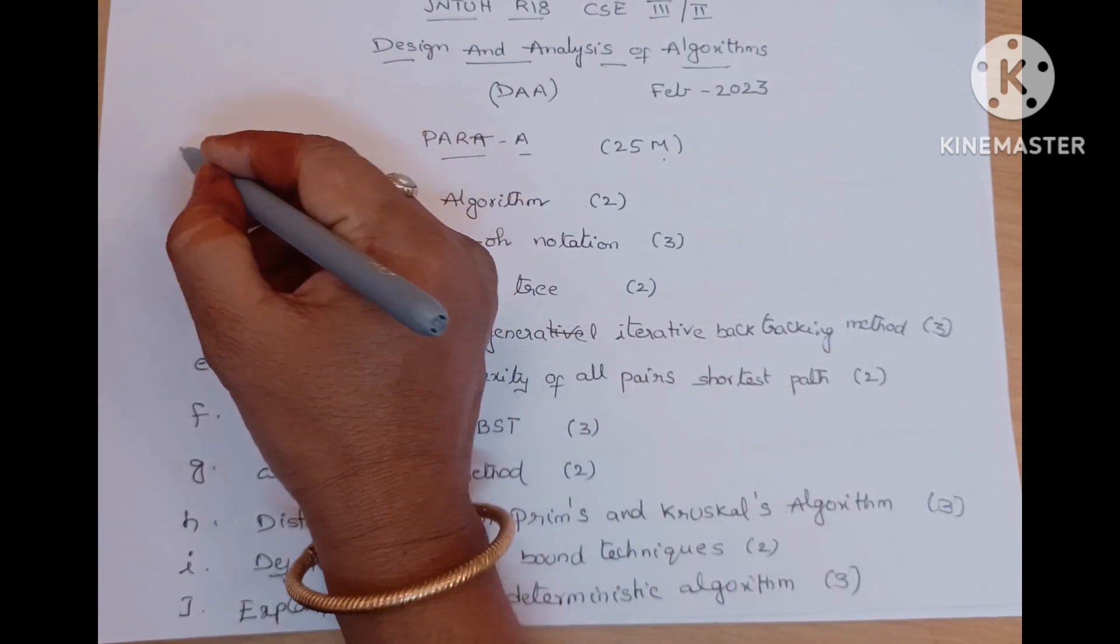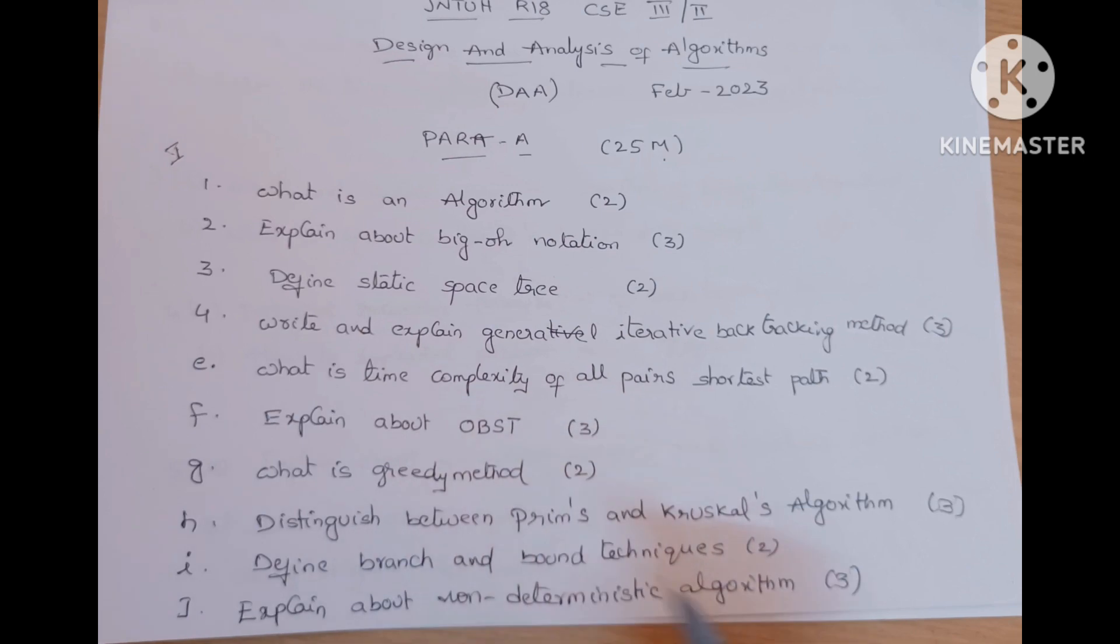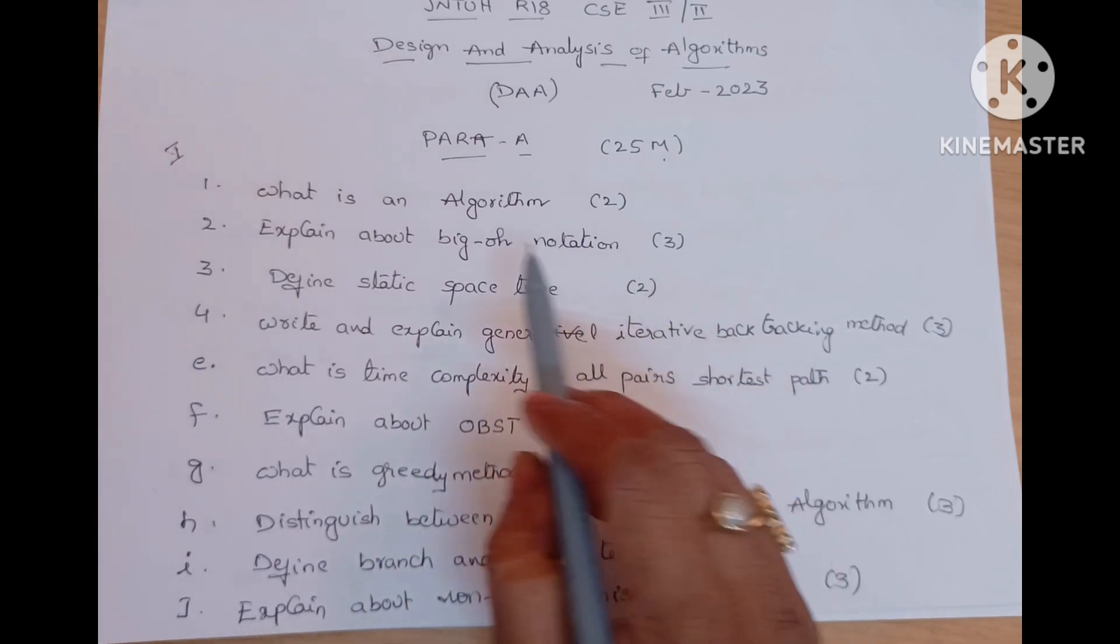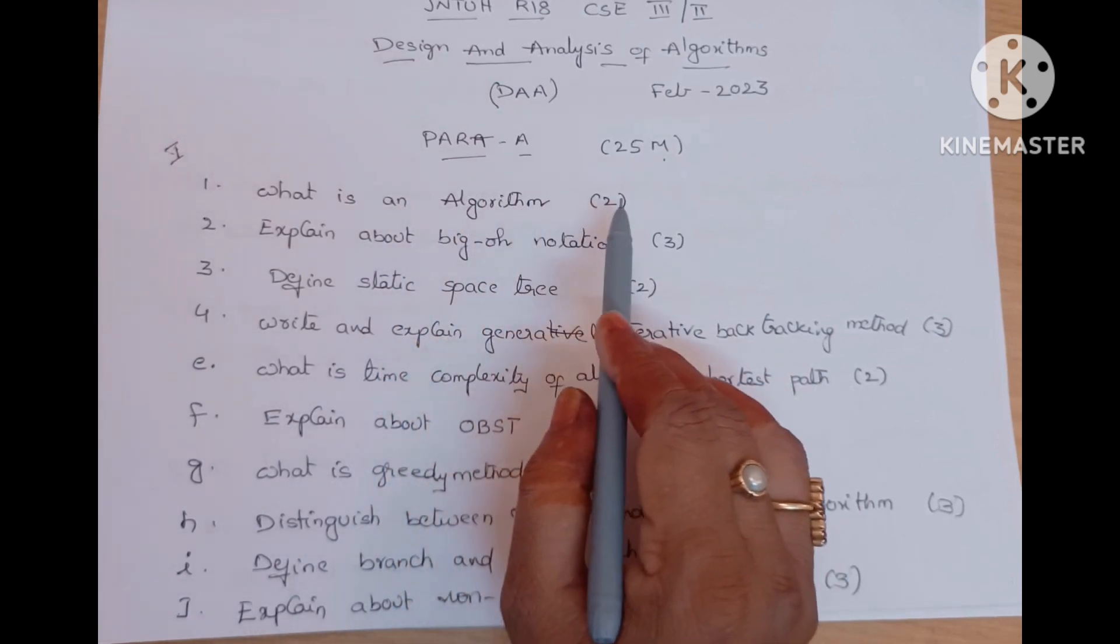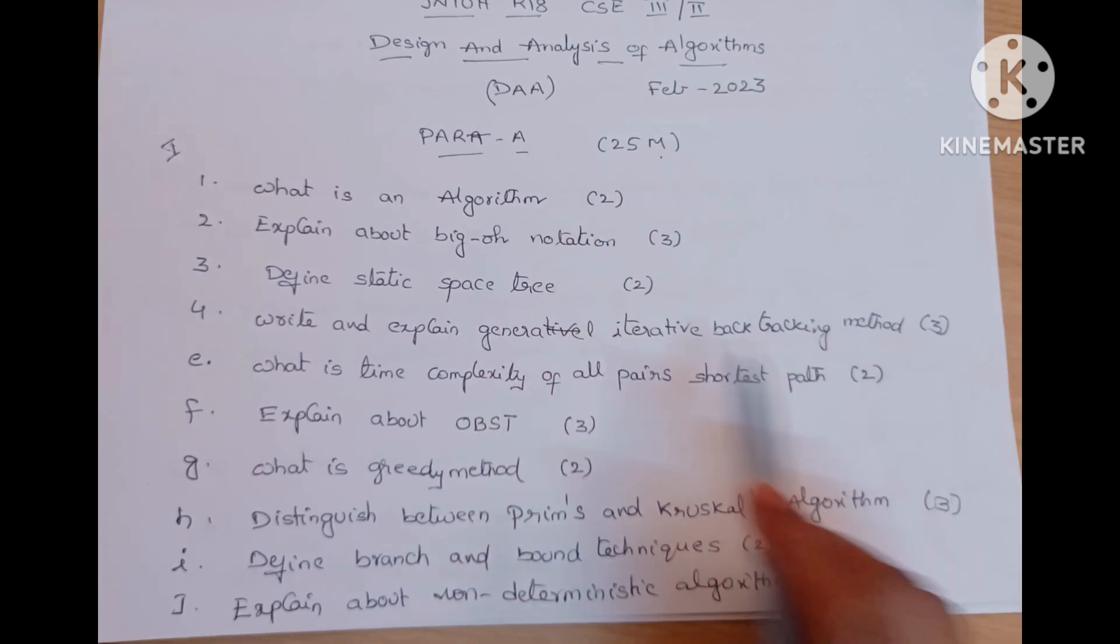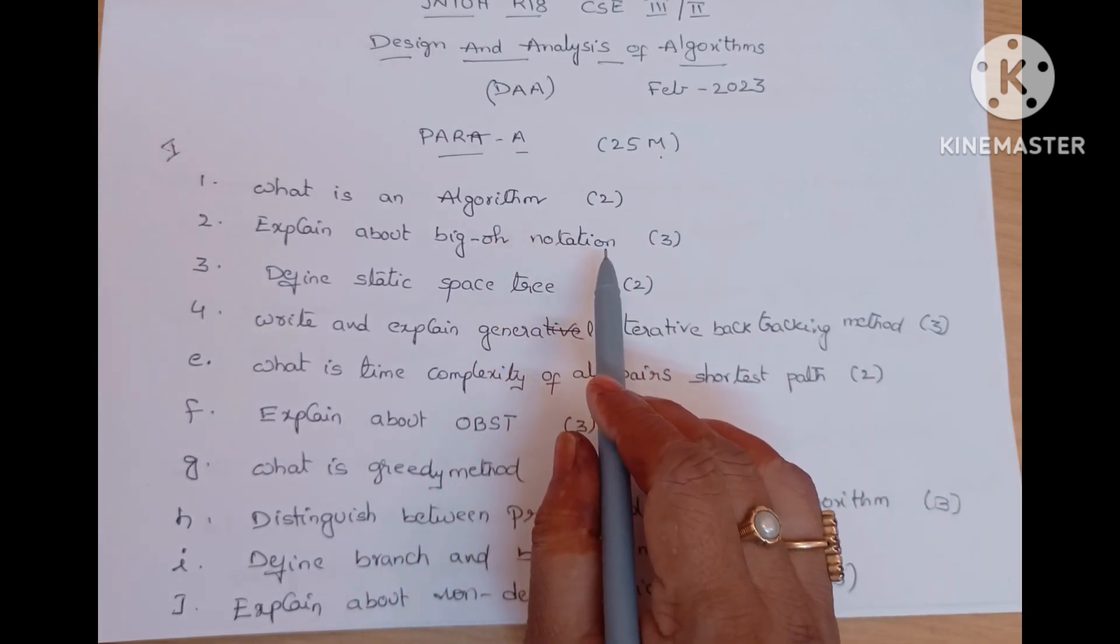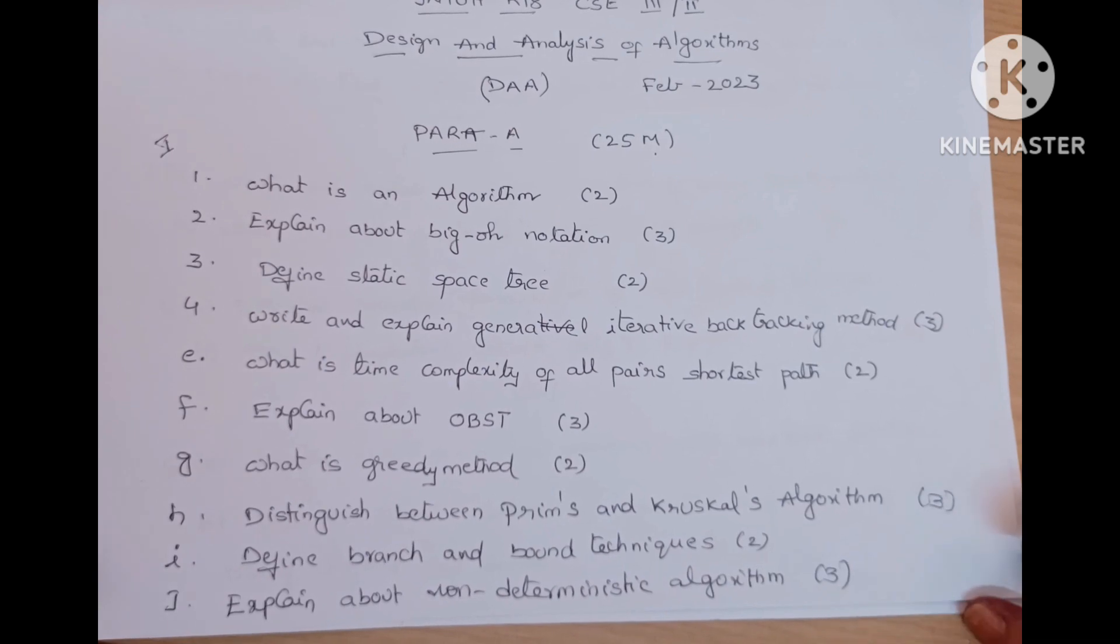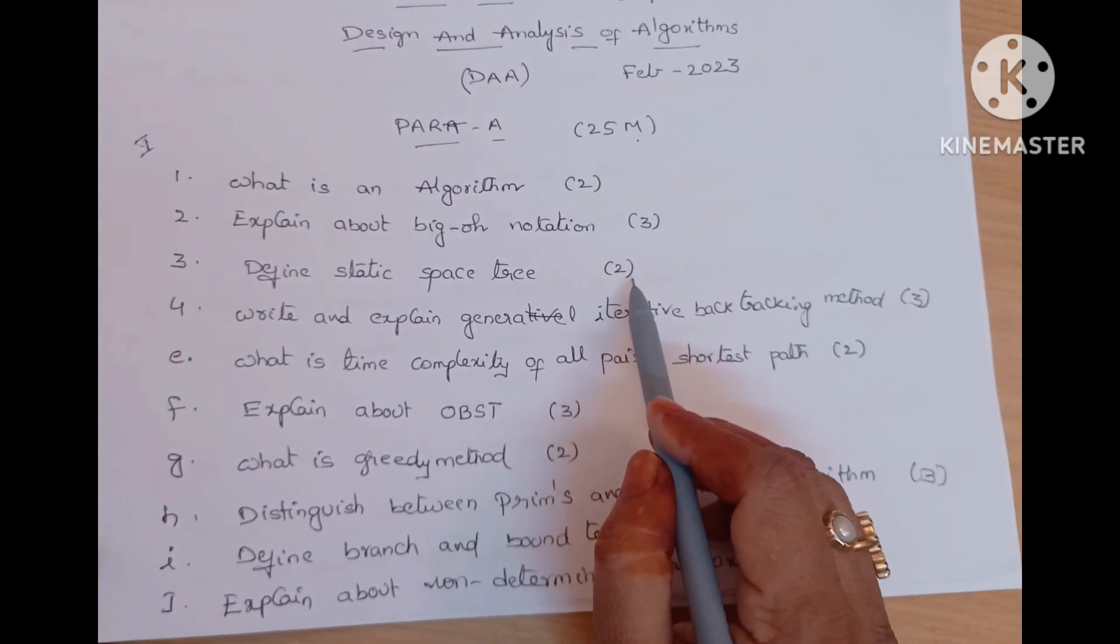Part A is the first question A to J. That means 10 questions are there. Here first question is what is an algorithm? Two marks question. Explain about big O notation, very important question this one. Define static space tree, two marks question.